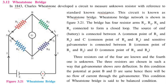The Wheatstone Bridge network has four resistor arms: R1, R2, R3, and R4, forming a closed loop. The source of EMF is connected to point A, which is the common point of R1 and R3, and to point C, which is the common point of R2 and R4. A sensitive galvanometer is connected between points B and D, where B is the common point of R1 and R2, and D is the common point of R3 and R4.